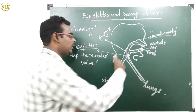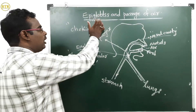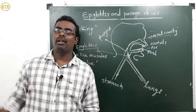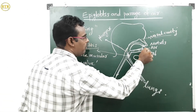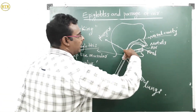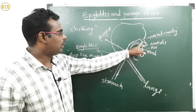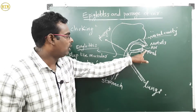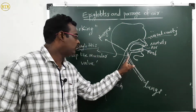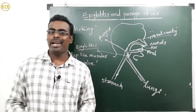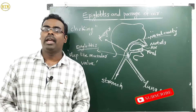The epiglottis closes and opens the windpipe due to the involvement of the central nervous system. Epiglottis closes the windpipe when we take food, and epiglottis opens when we take air. When we swallow the food, epiglottis closes the windpipe. When we take air, epiglottis opens. That is the function of epiglottis.